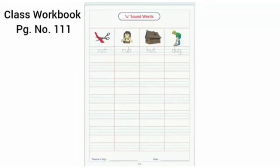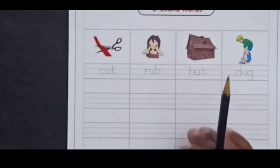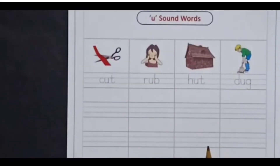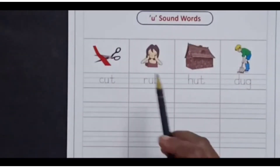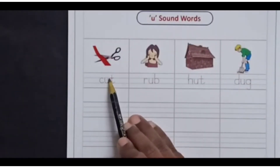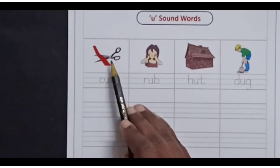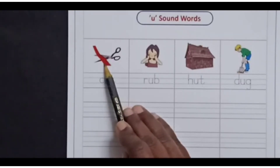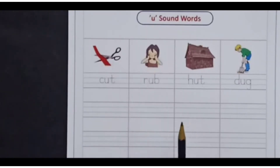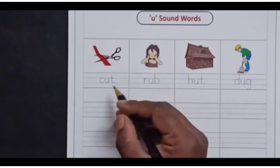Open your class workbook page number 111. We will use some words. The first word here is C-U-T, cut — to cut something. Let's trace it first.